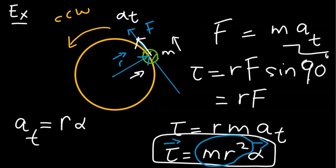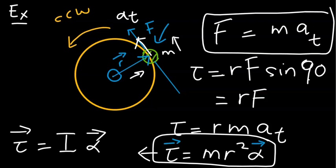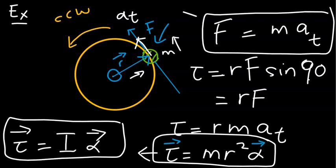Now, MR² for such a system is quite simply the moment of inertia of this point mass about the rotation axis coming out of the plane. So this equation is the same equation we wrote for the disk system. One can also see the resemblance between this rotational equation and Newton's second law for linear motion. This equation right here defines Newton's Second Law for Rotation.